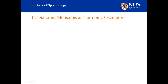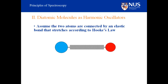Let's look at treating a diatomic molecule as a harmonic oscillator. We have two atoms connected by an elastic bond that can stretch according to Hooke's law — we treat it like a spring. You may have done an experiment with a spring and weights: the spring stretches as you apply more weight, and the stretching is proportional to the force applied. This behaviour is Hooke's law.